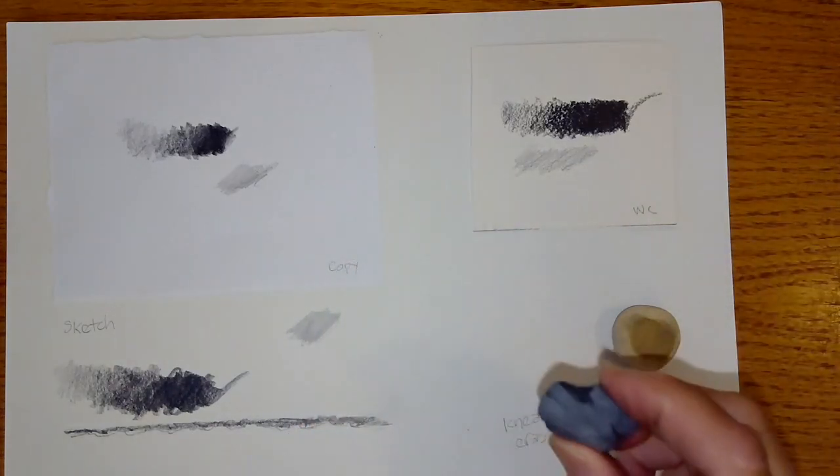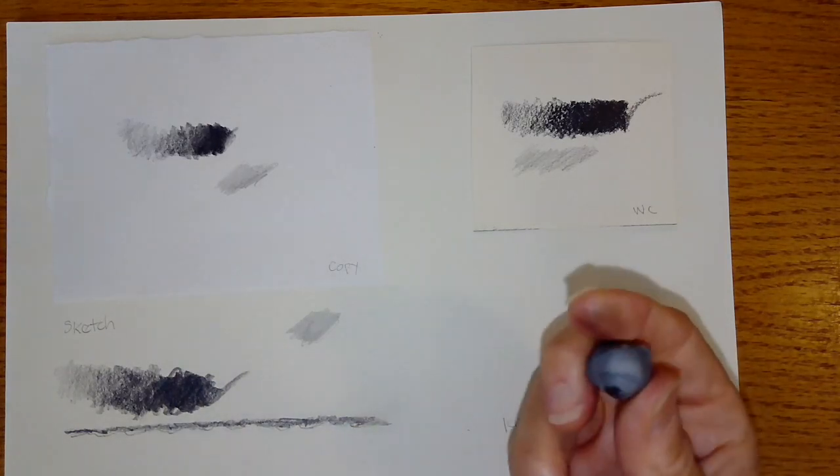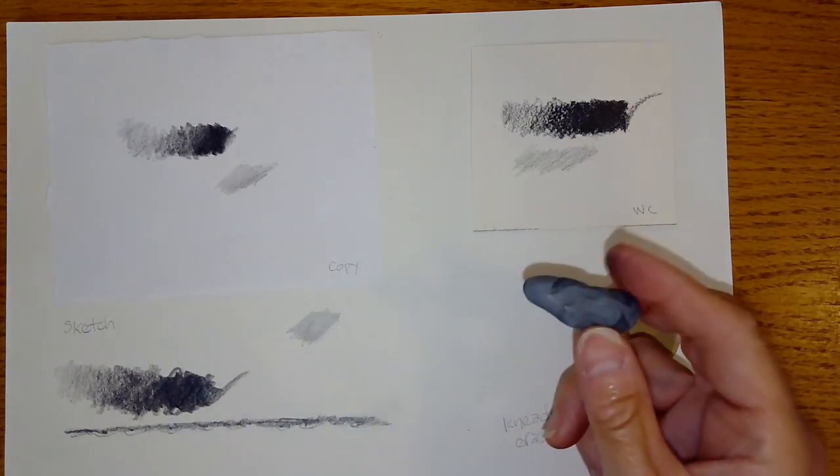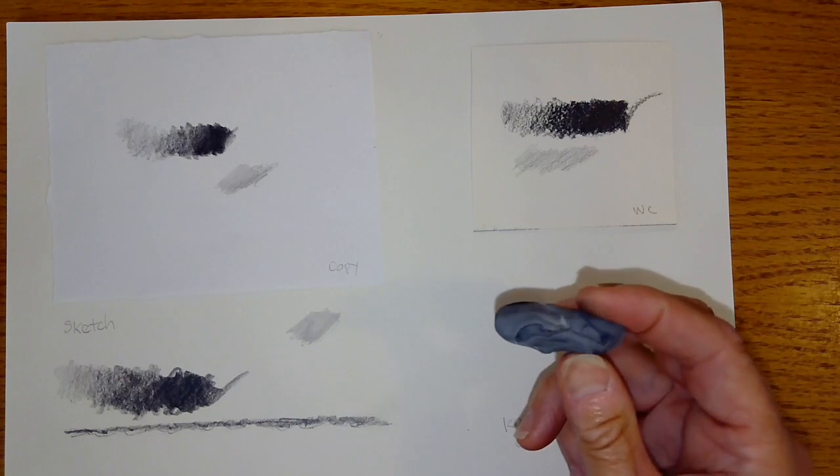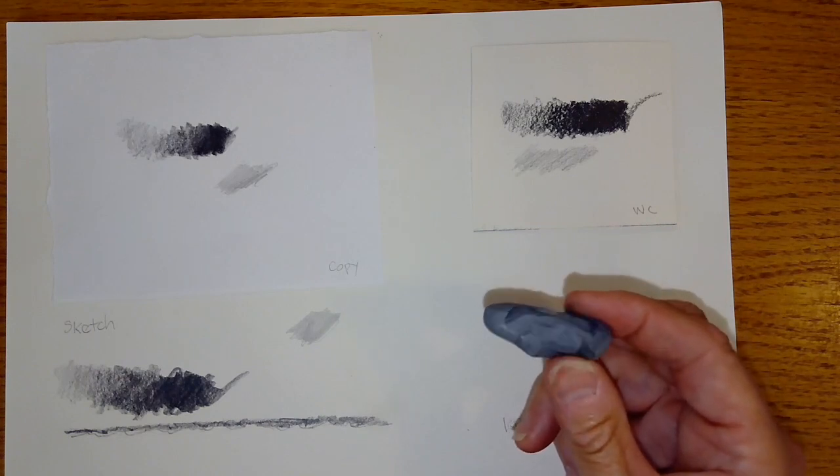All right, erasers real quick. A kneaded eraser is probably the one that you will use the most. It is not designed to take away all of the graphite on a paper. It's intended instead to lift away areas that have become too dark.